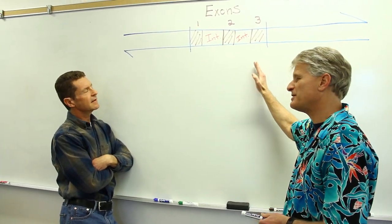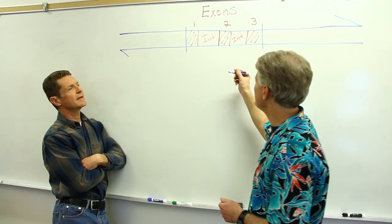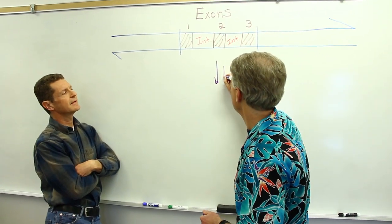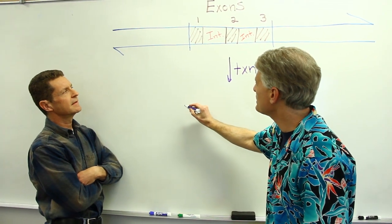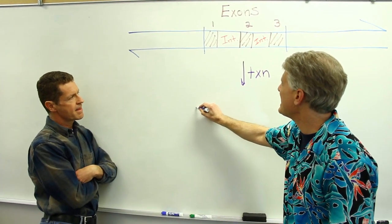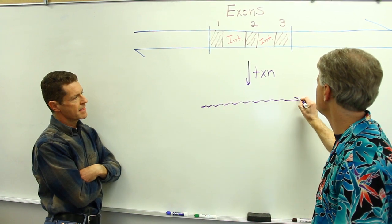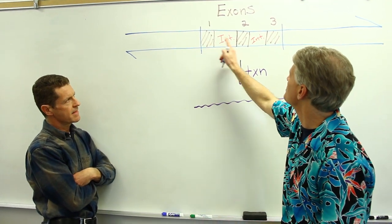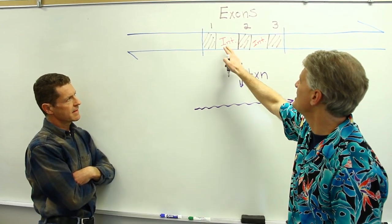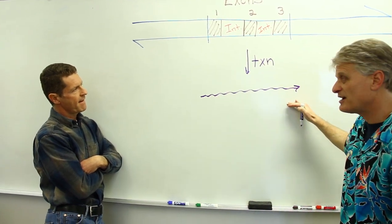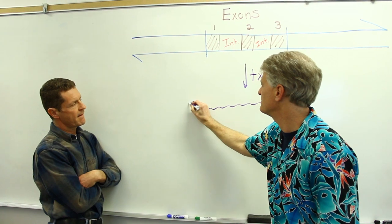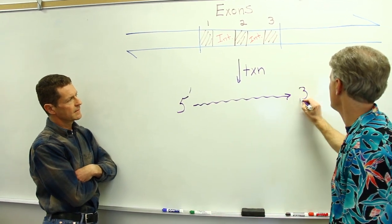Remember that the first step in gene expression is transcription. And transcription occurs in the nucleus, and you will transcribe, make an RNA copy of both the exon and intron sequences. So we have three exon sequences and two intervening intron sequences. Those are all, this is the RNA copy.